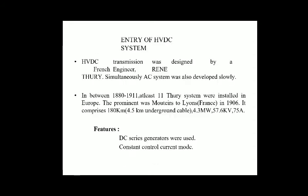HVDC transmission was designed by a French engineer René Thury, while AC systems were simultaneously being developed. Between 1880 and 1911, at least 11 Thury systems were installed in Europe. The prominent one was Moutiers to Lyons, France in 1906, comprising 180 kilometers with 4.5 km of underground cable, 4.3 megawatts, 57.6 kilovolts, and 75 amperes.